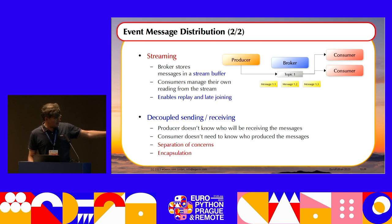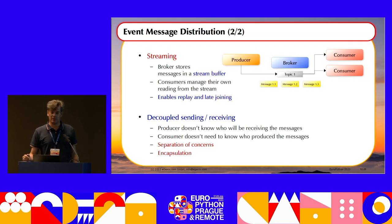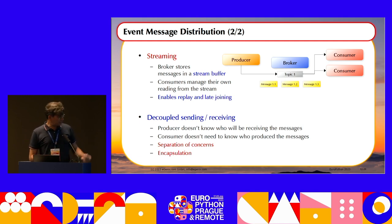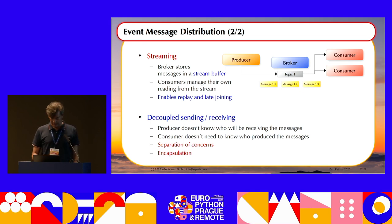This whole architecture introduces decoupled sending and receiving. Producers don't need to know who consumes their messages, and consumers don't need to know who produces them. Consumers are only interested in the types of messages they're getting. This achieves two design goals: separation of concerns and encapsulation.